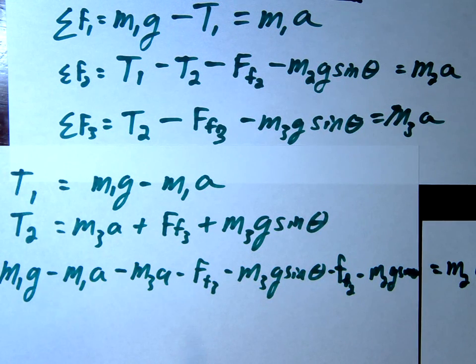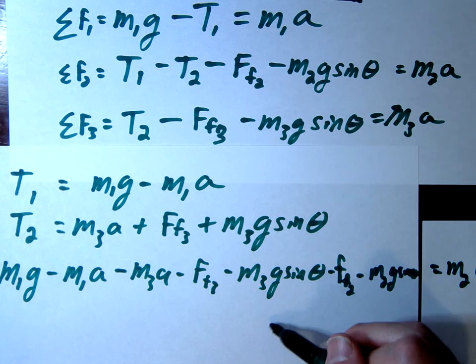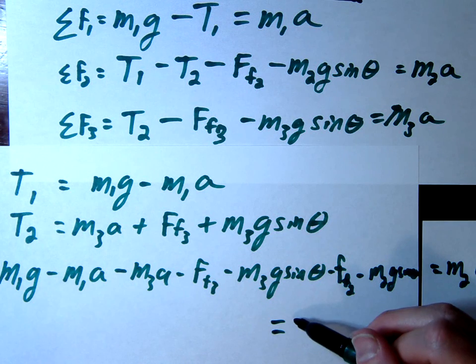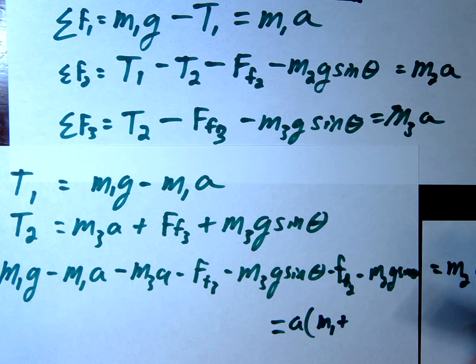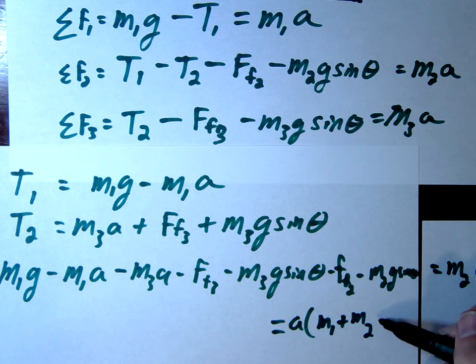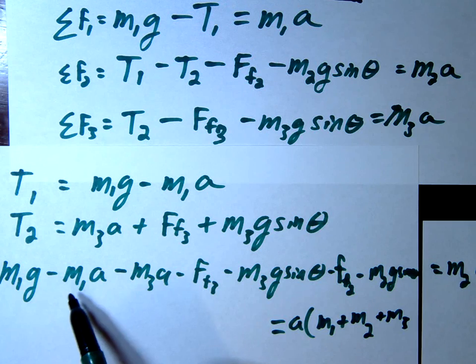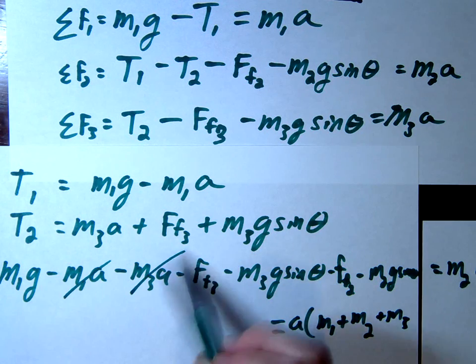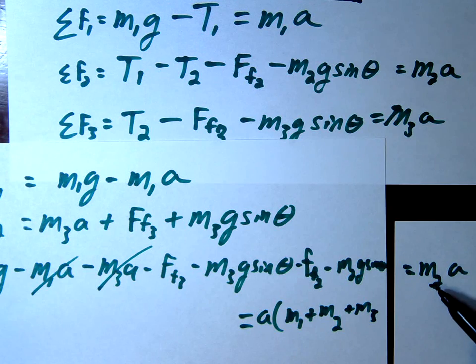Okay, so there we go. Look at that bad boy. Let's go ahead and get all the A's on one side. So add this, add this. So I'm just going to put it right here. So you're going to have, I'm just going to skip a couple steps. A times M1 plus M2 plus M3. Basically I added this over there, added this over here to this side. M2A, and then factored out that A.